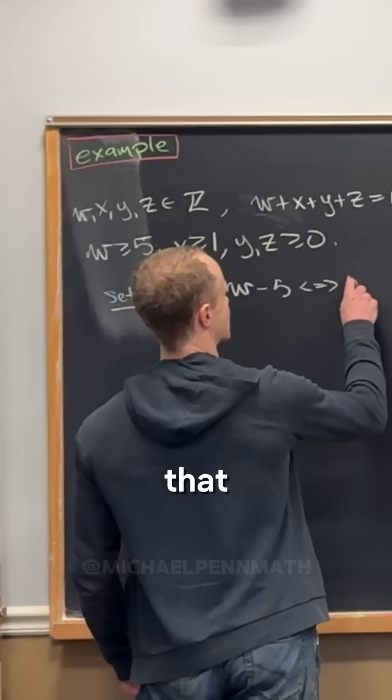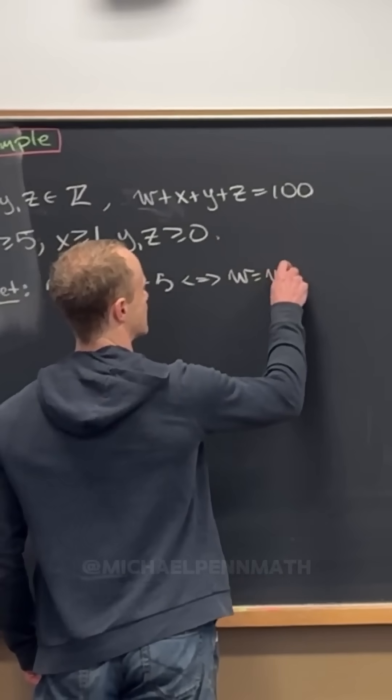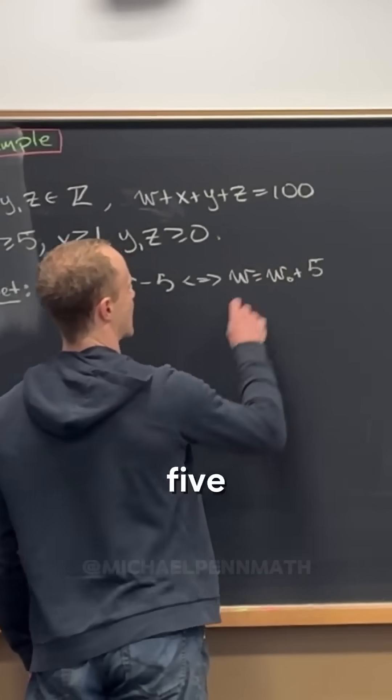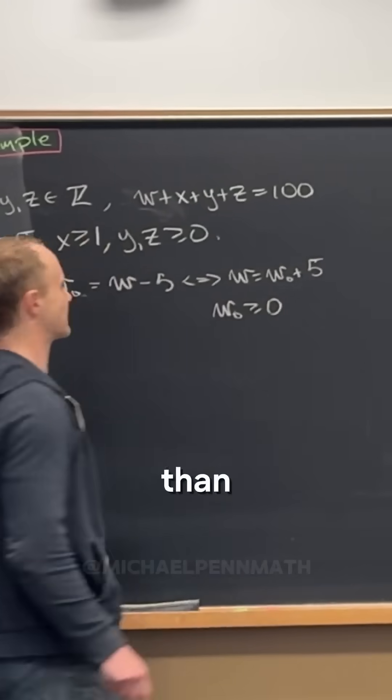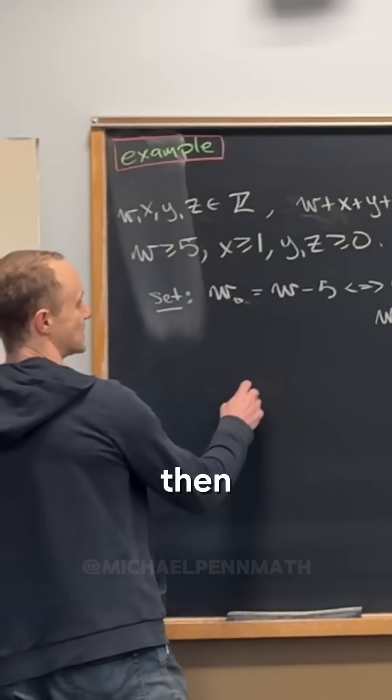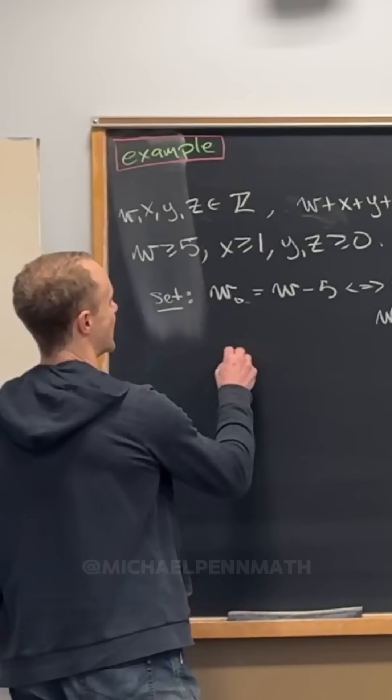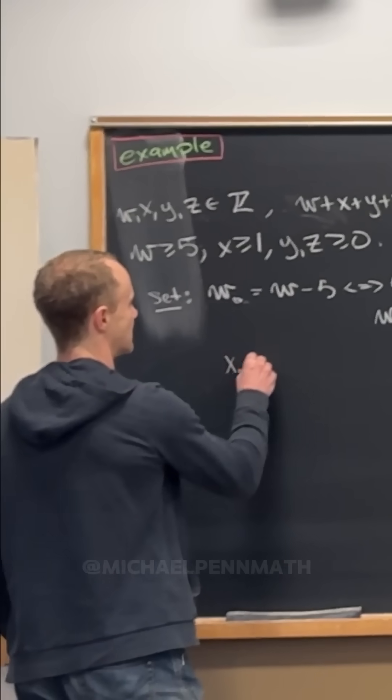But that means that w is equal to w naught plus 5, and w naught is bigger than or equal to 0. And then let's also set x naught equal to x